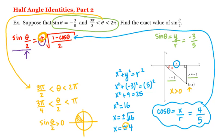Now there's a common mistake that students make. Looking at the figure, we see that theta is in quadrant four, and students will think that because sines are negative in quadrant four, they should choose the negative value. Don't look at where theta lies — look at where theta over two lies.